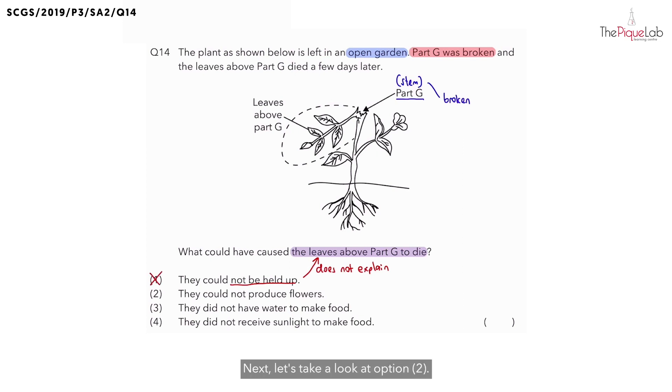Next, let's take a look at option two. They said that the leaves above part G could not produce flowers. In the first place, can leaves produce flowers? No. So is this statement even true? Definitely not. So let's cross out option two.